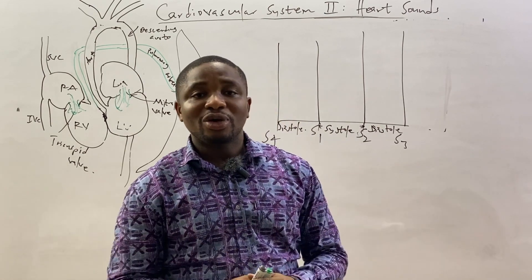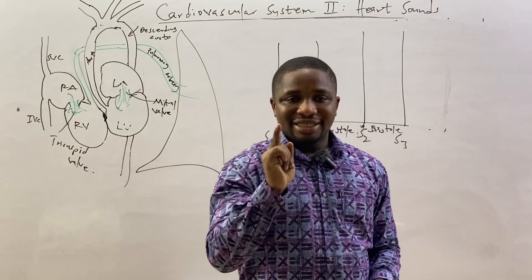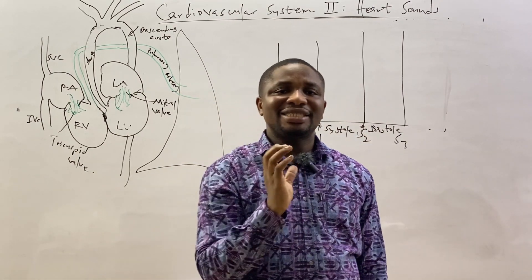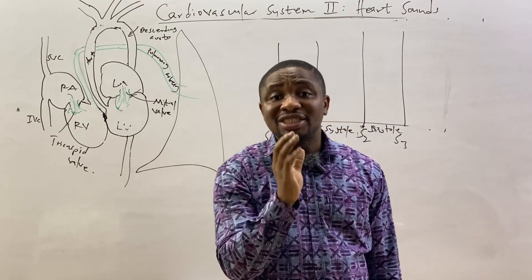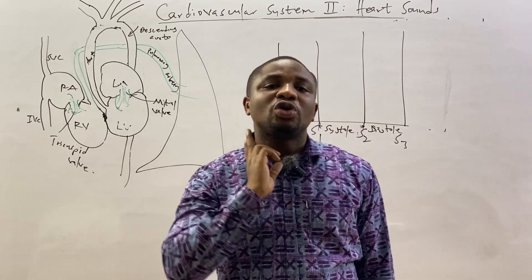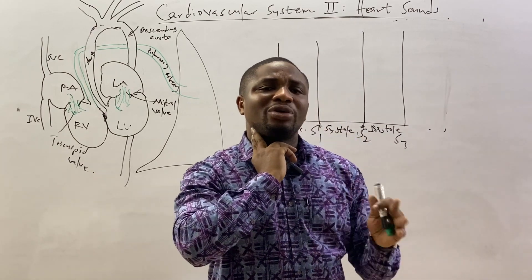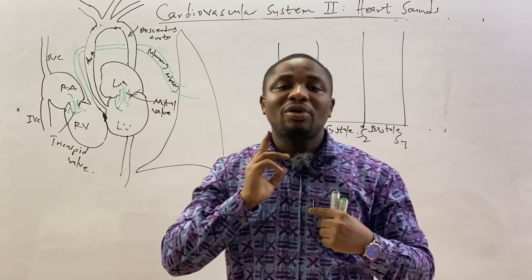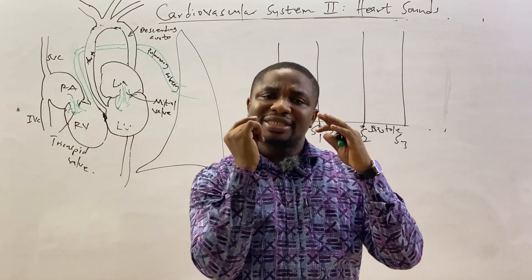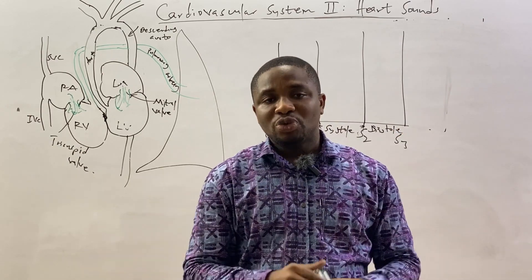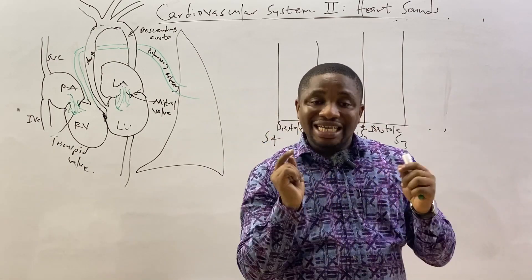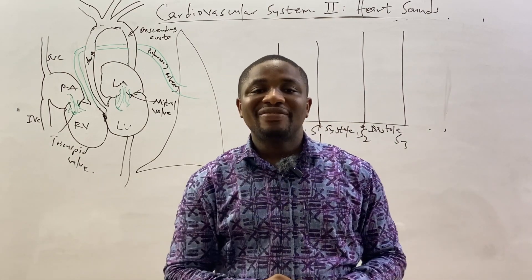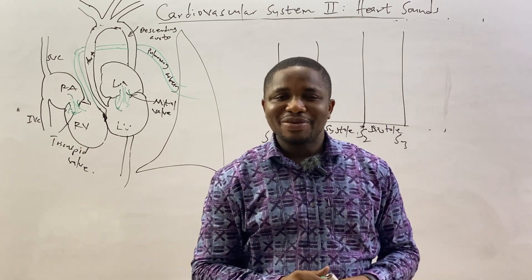S1 always corresponds to the heart stroke — systole. When listening to heart sounds, always simultaneously palpate the carotid pulse. Any sound that is synchronous to the carotid pulse is S1, because S1 is synchronous to systole. S1 is produced at the beginning of systole, and S2 is at the end of systole and beginning of diastole.